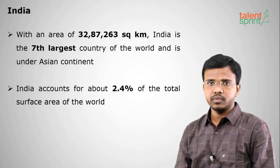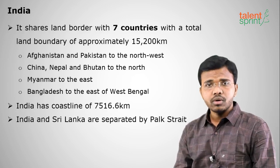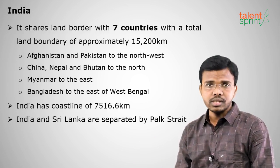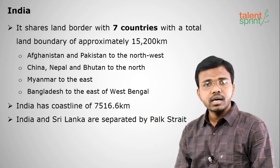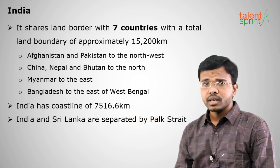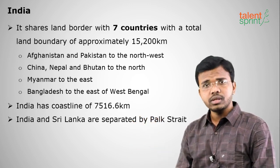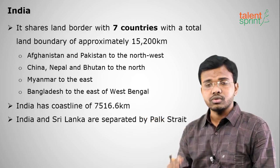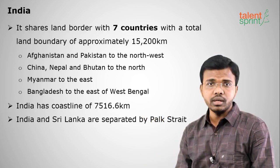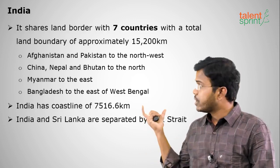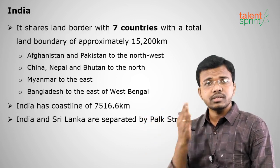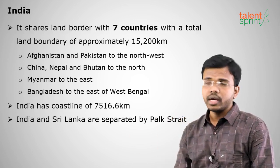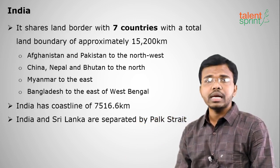India has a land boundary with seven countries. Those countries are Afghanistan and Pakistan on the northwest, China, Nepal and Bhutan on the north, and Myanmar and Bangladesh to the east. Out of these, Bangladesh has the highest land boundary with India and Afghanistan has the lowest land boundary.